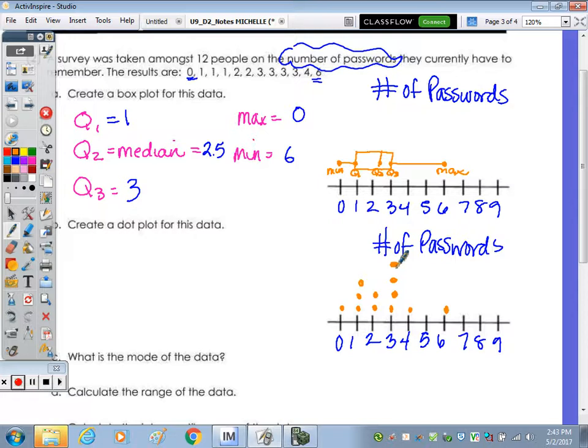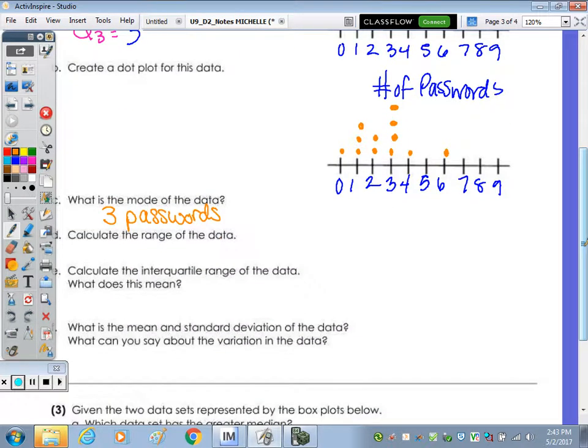What is the mode of the data? 3 passwords, good. Calculate the range. So I actually have to see a calculation being done. So it's max minus the min, so I need to see 6 minus 0, which is 6 passwords.